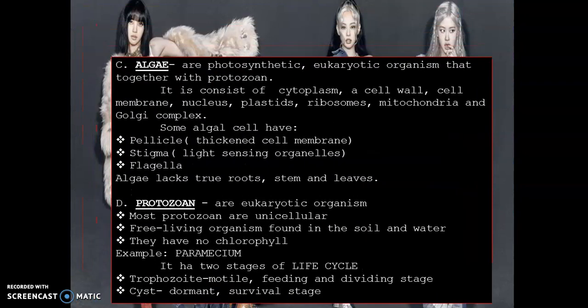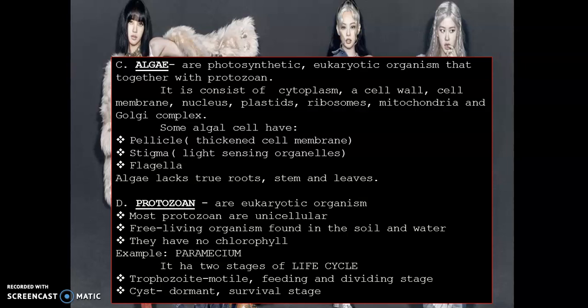The next category of microorganism is algae. Algae are photosynthetic eukaryotic organisms that, together with protozoa, consist of cytoplasm, cell wall, cell membrane, nucleus, plastids, ribosomes, mitochondria, and Golgi complex. Some algal cells have a pellicle, which is a thickened cell membrane; a stigma, which is a light-sensing organelle; and some have flagella. Always remember that algae lack roots, stems, and leaves.